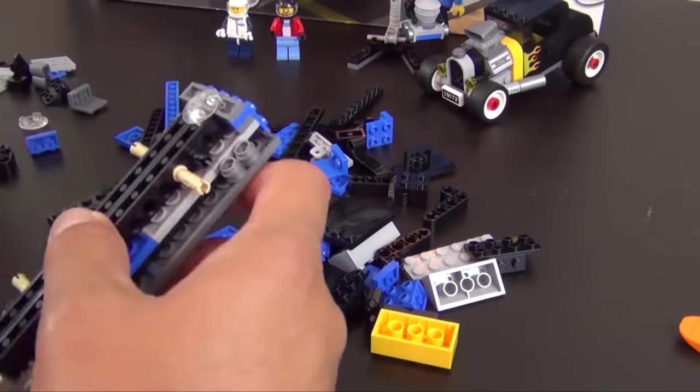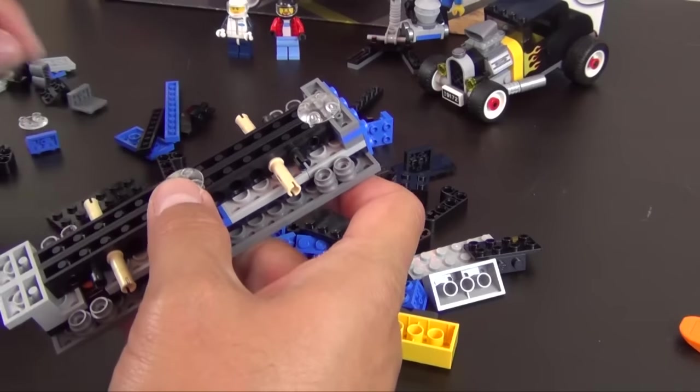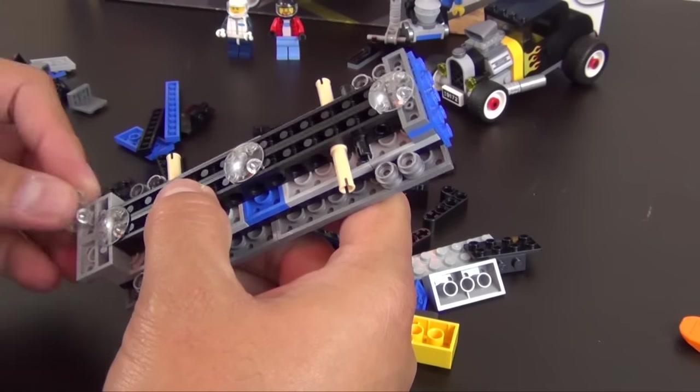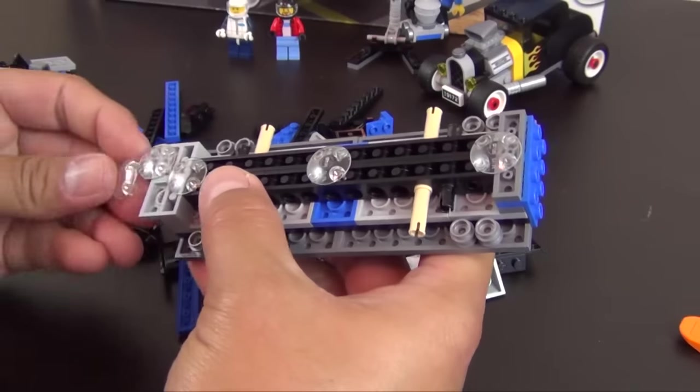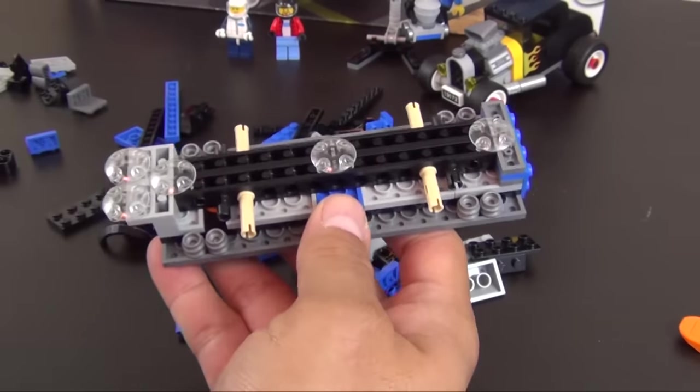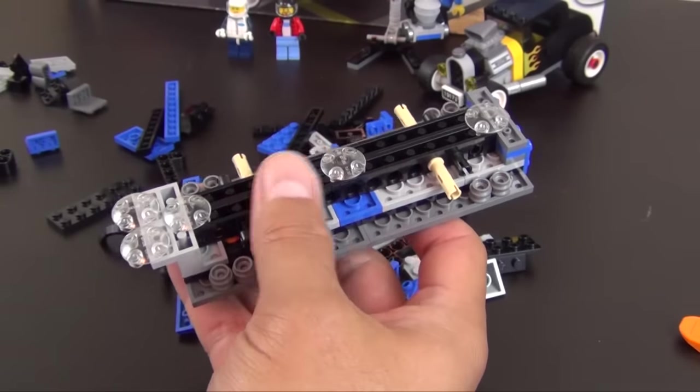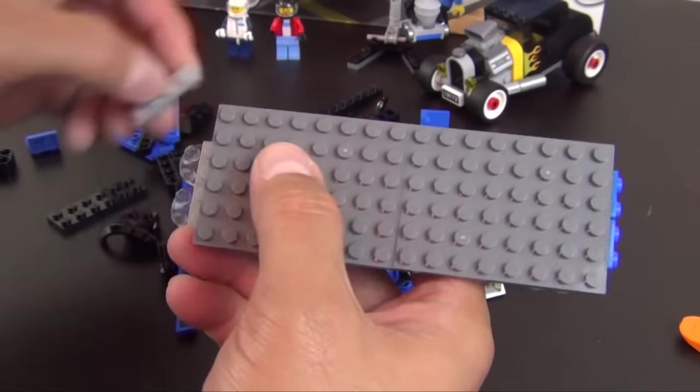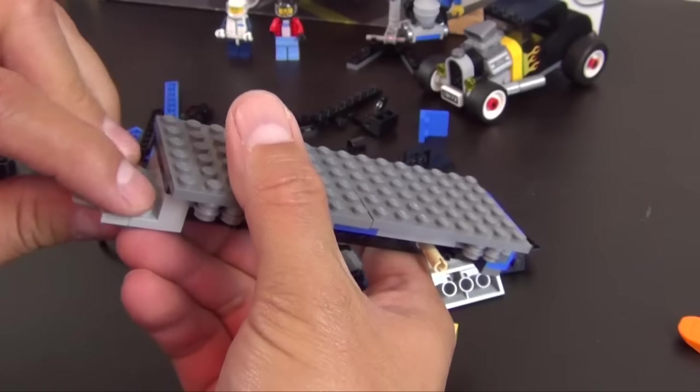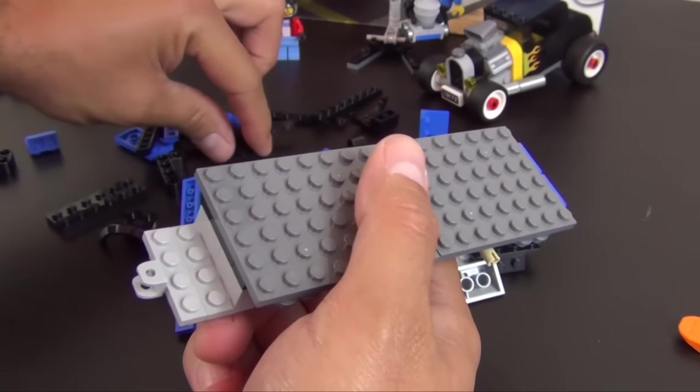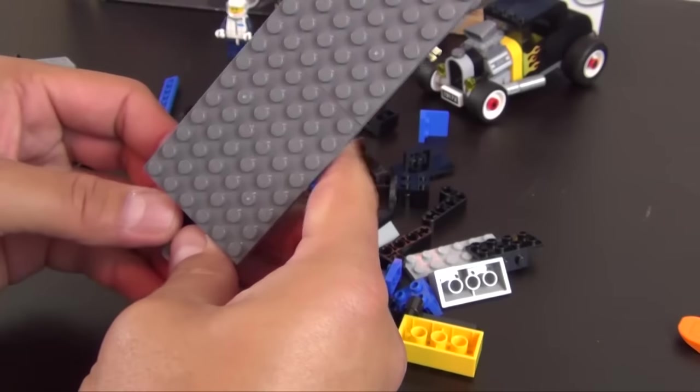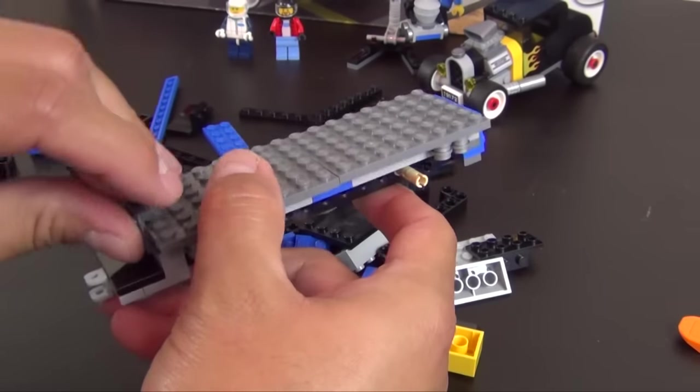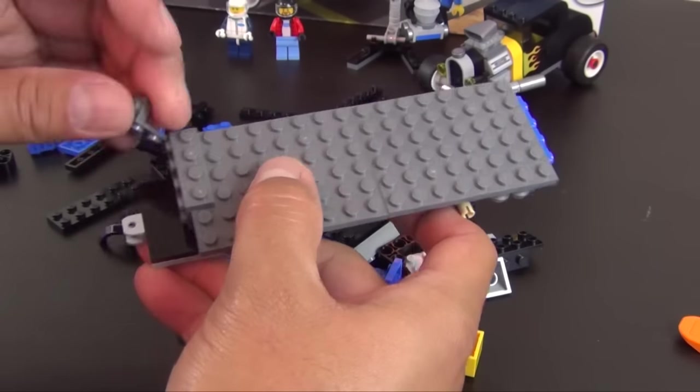Now we have quite a few of these anti-tiles, clear version, two of them that are going to hang out on the front here. Turn this back over, we have a towball hook piece along with a two by four tile. So this is the back of the truck. Got some brackets.